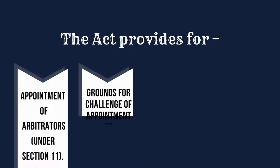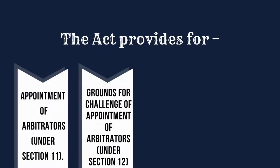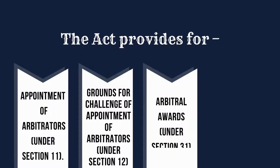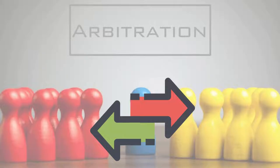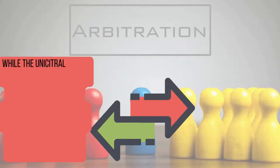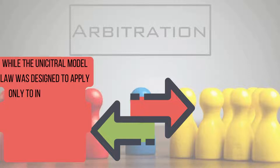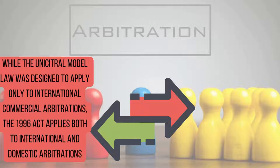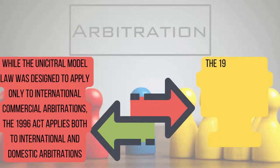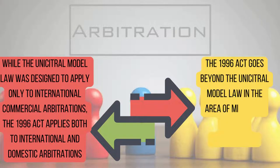The Act provides for appointment of arbitrators under Section 11, grounds for challenge of appointment of arbitrators under Section 12, arbitral awards under Section 31, and grounds for challenging arbitral awards under Section 34. Notably, the 1996 Act contains two unusual features differing from the UNCITRAL Model Law: it applies to both international and domestic arbitrations, and goes beyond UNCITRAL in minimizing judicial intervention.